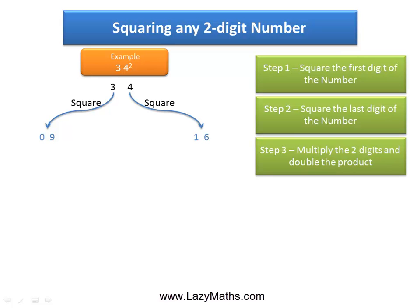The third step is to multiply both digits, 3 and 4, and then double the product. So 3 times 4 is 12, and double of 12 is 24. As you can see, we have two-digit numbers: 0, 9, then 24, and 16 across.